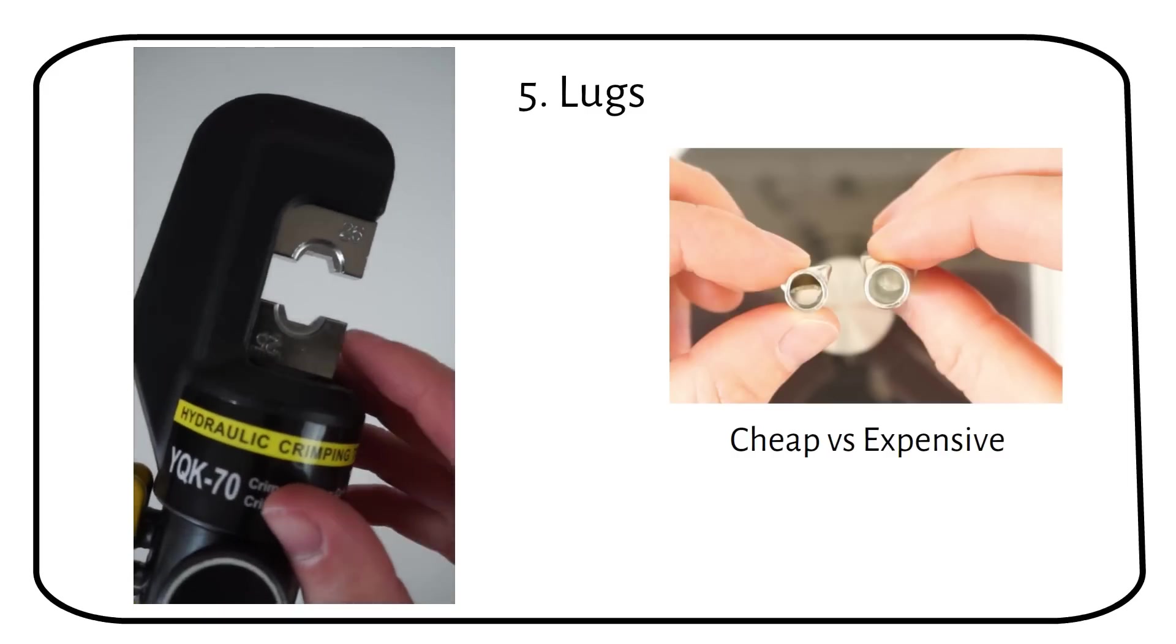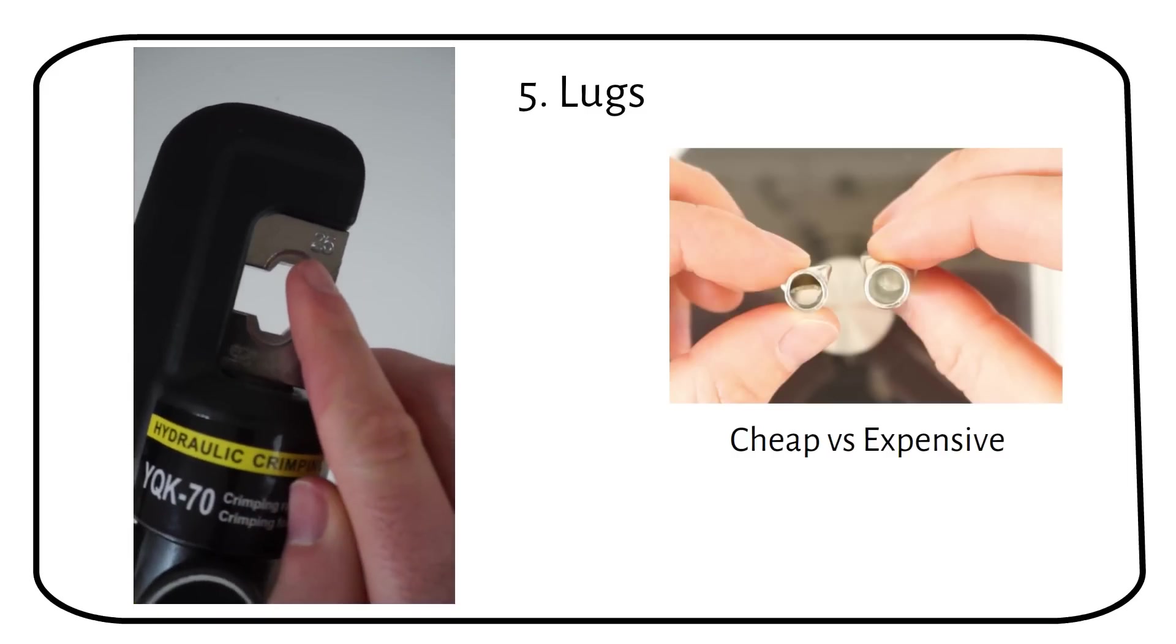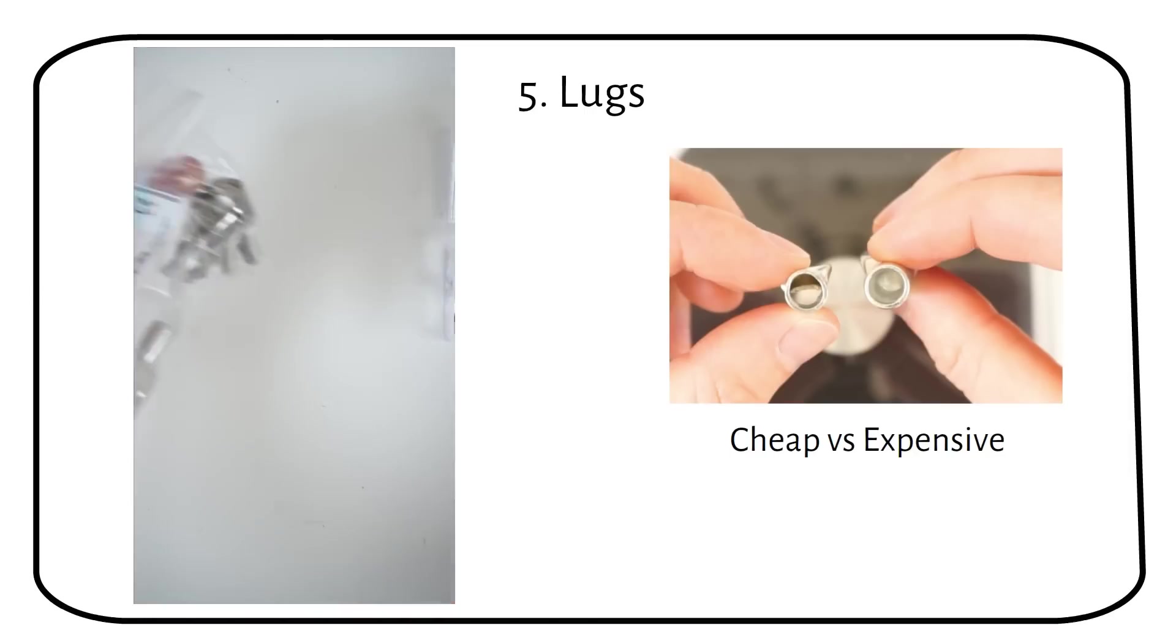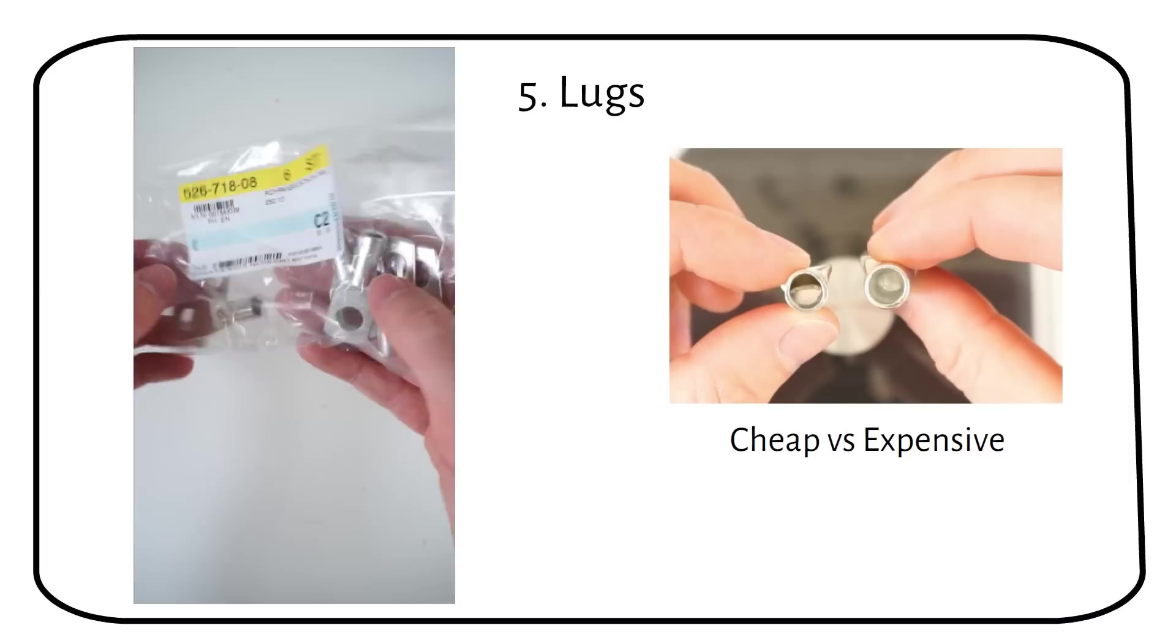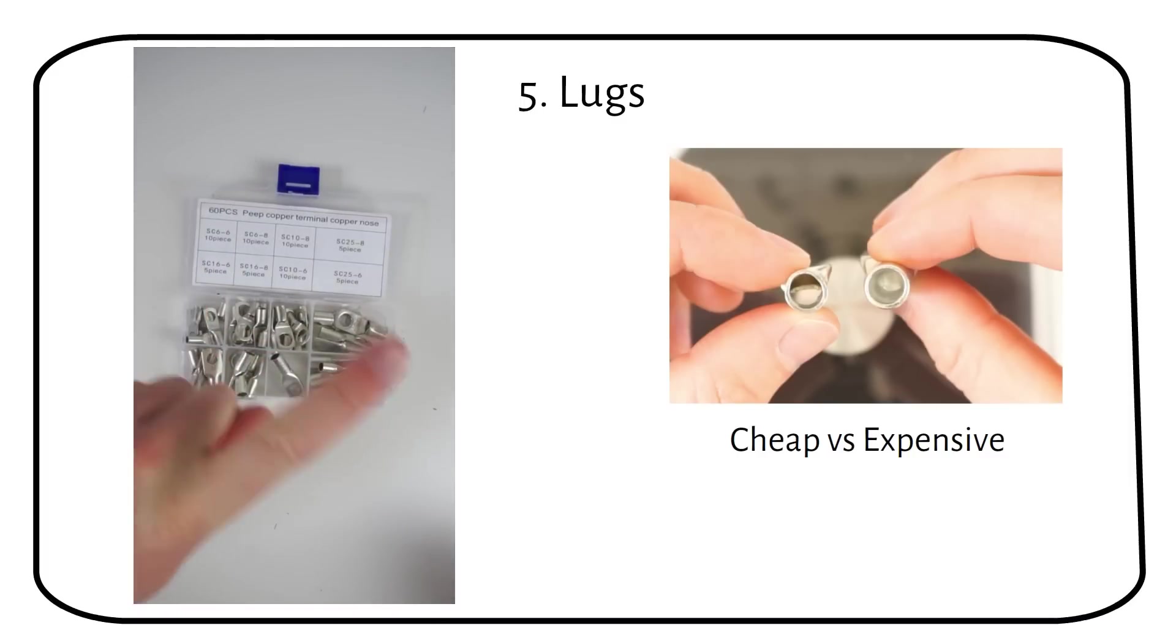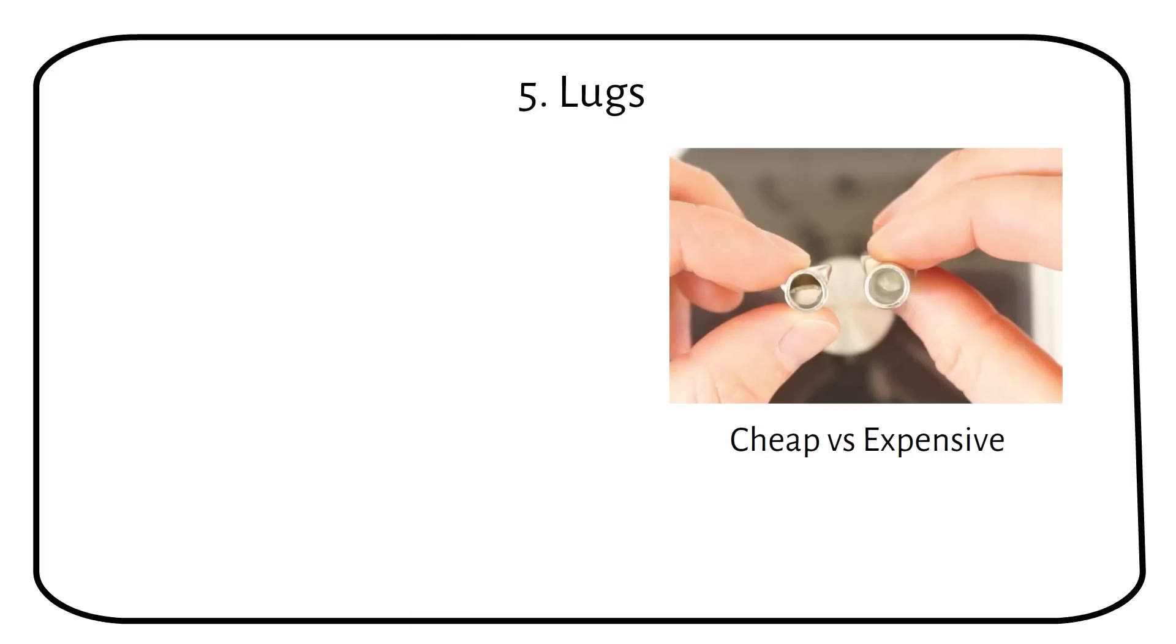You can see me pulling back the insulation. Some people complain that the dies of the hydraulic crimper are too big. But in fact, it's the cheap lugs you're using. When choosing cable lugs, use lugs that cost at least $1 each. So don't buy cheap ones.